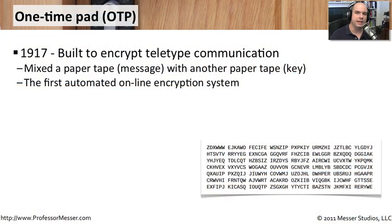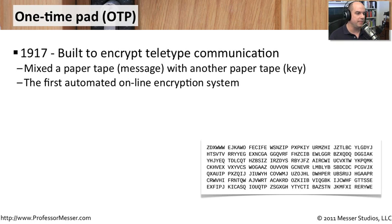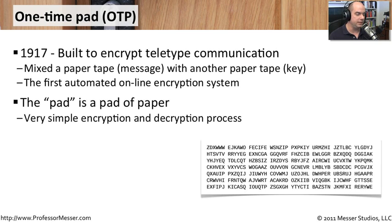A one-time pad is a cipher that was created in the early 1900s, built when teletype machines were first becoming popular as a way to encrypt communication on teletypes. It was an automated system with a very interesting effect on communications, because then you could really have private messages go back and forth between one place and another.